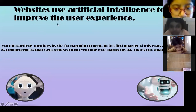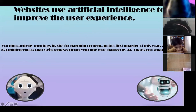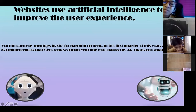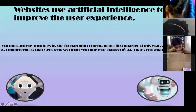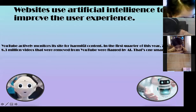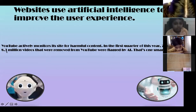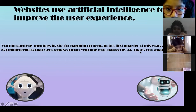In fact, millions of workers may soon report to robot bosses. Scientists and websites use artificial intelligence to improve the user experience. YouTube monitors its site for harmful content — in the first quarter of this year, 76 percent of the 3.8 million videos removed from YouTube were flagged by artificial intelligence.